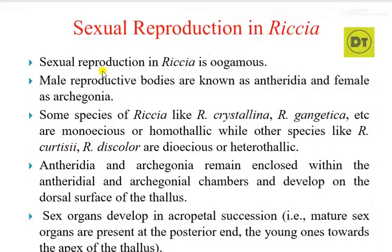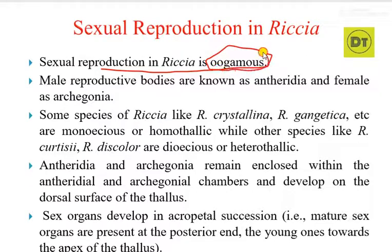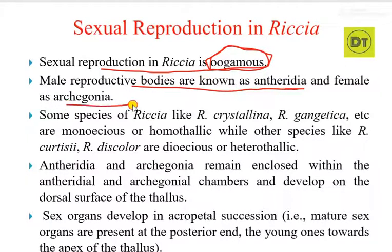Sexual reproduction in Riccia is oogamous. It is a type of reproduction where there are different types of gametes — male gametes and female gametes. Male gametes are small and motile, and female gametes are non-motile. Male reproductive bodies are known as antheridia and female are known as archegonia.